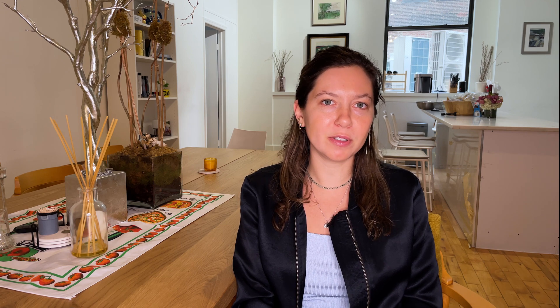These rules can encompass a lot of use cases around security, audit, or even cost optimization. For example, there's a Config rule to check your Amazon S3 buckets to make sure that there isn't any public access on an account level. Config will take a look at your S3 buckets and make sure that they are in a desired configuration state to keep them in compliance.